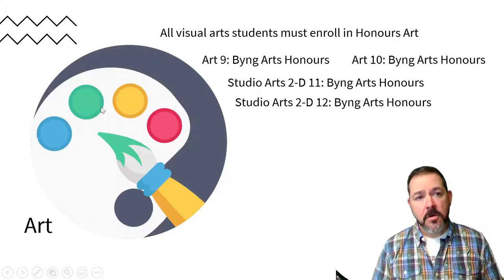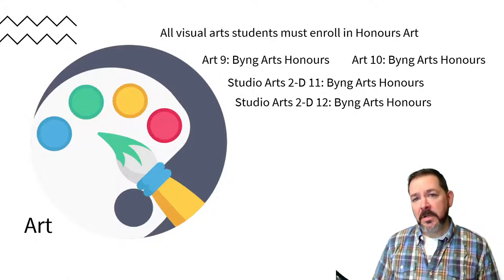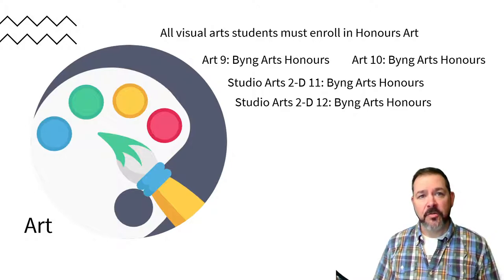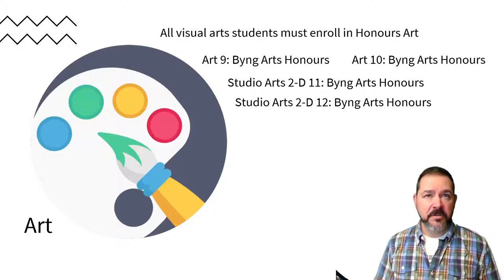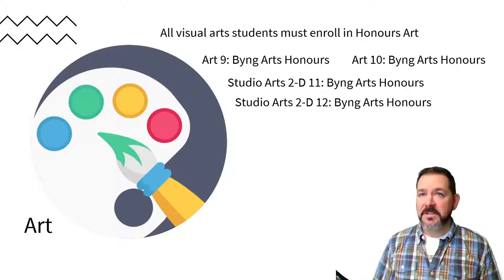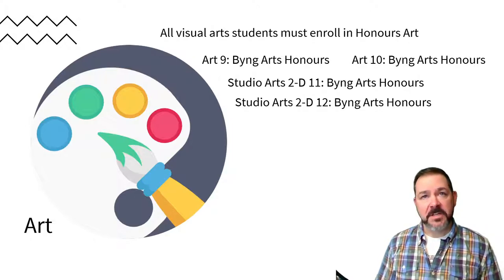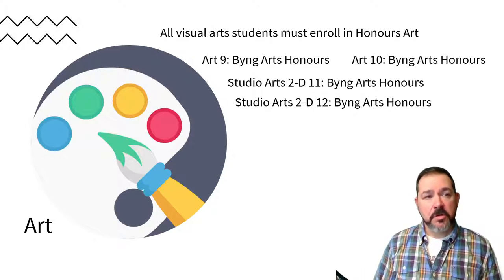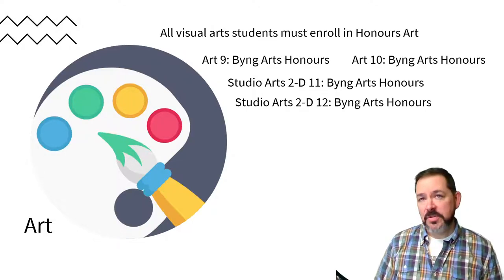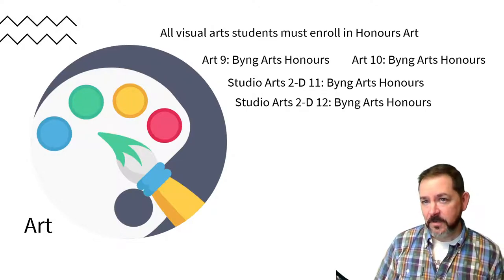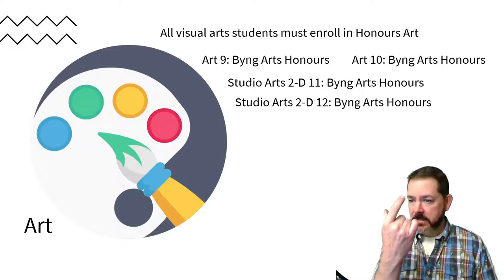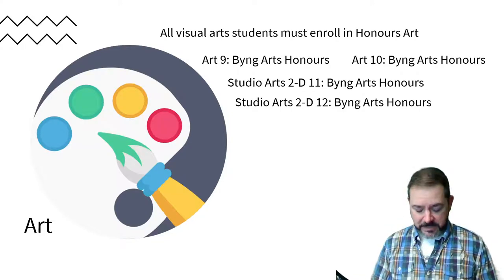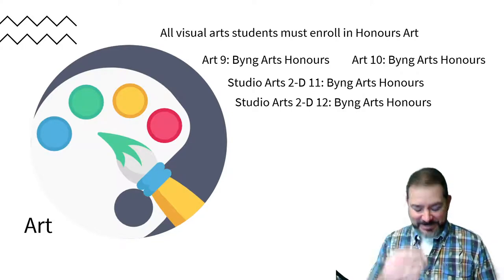For art, every student in Bing Arts Visual Arts will be taking the Honors Art class in their grade year. Grade 8s going into grade 9 take Bing Arts Honors Art, and Honors Art 10 in grade 10. It becomes Studio Art 2D 11 Bing Arts Honors and Studio Art 2D 12 Bing Arts Honors in the senior program. That's one class, and you've got your second class of your Bing Arts gang sign.